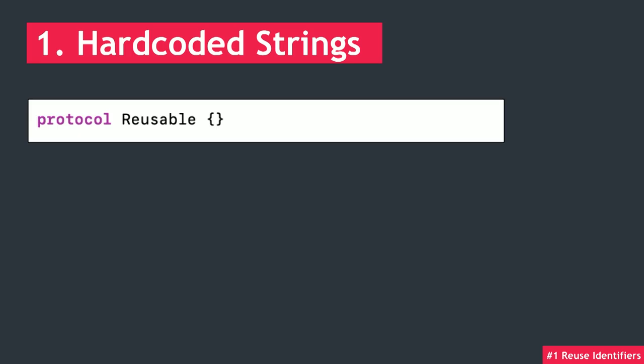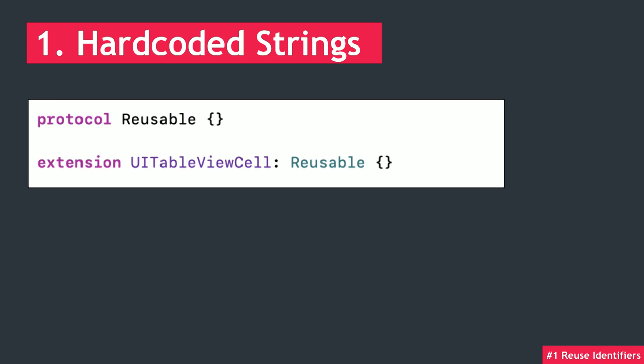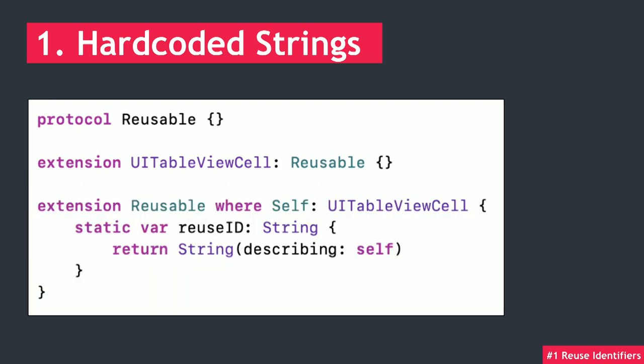We can create a dummy protocol called Reusable and extend UITableViewCell with Reusable. Then we can extend Reusable for the instances where self is of type UITableViewCell and add the reuse ID there as a static computed property. Now any of our cell subclasses will have access to their unique identifier. Problem one solved.